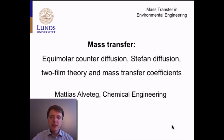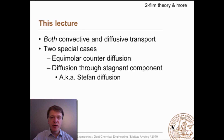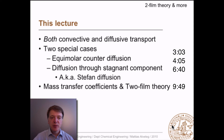In this screencast on mass transfer we will talk about equimolar counter diffusion, Stefan diffusion, two-film theory and mass transfer coefficients. We will start by talking about what happens when we have both convective and diffusive transport, then turn our attention to two special cases: equimolar counter diffusion and diffusion through stagnant component, where the latter is also known as Stefan diffusion. At last we will talk about mass transfer coefficients and two-film theory.